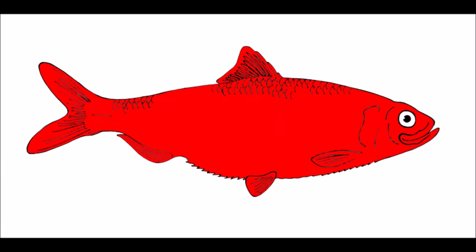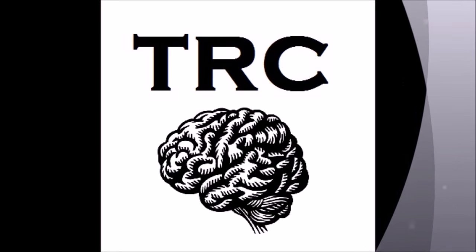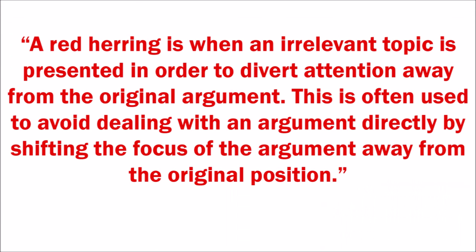In this video, we'll be looking at the red herring fallacy, and then see an example by Australian Prime Minister Tony Abbott. A red herring is when an irrelevant topic is presented in order to divert attention away from the original arguments. This is often used to avoid dealing with an argument directly by shifting the focus of the argument away from the original position.